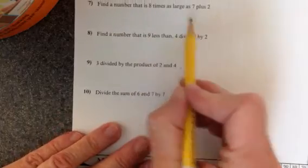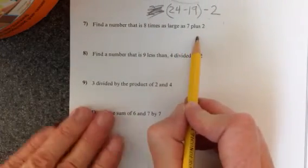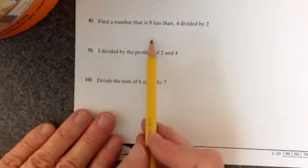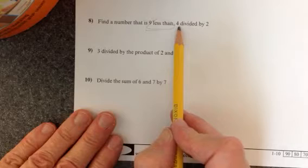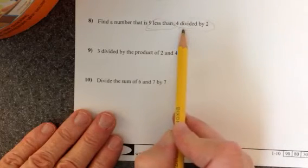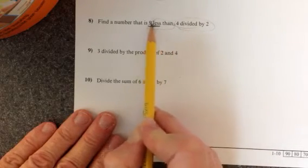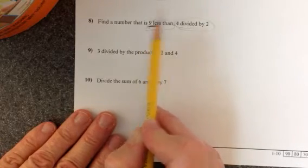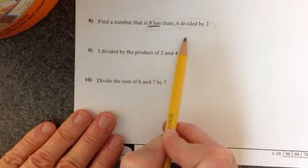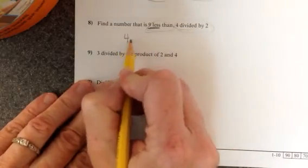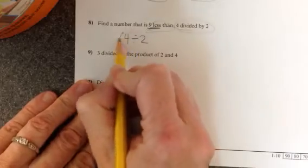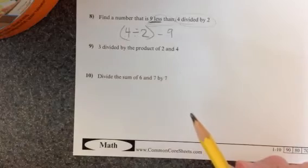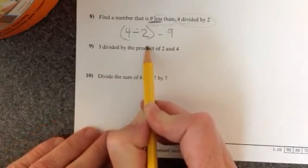Find a number that is 8 times as large as 7 plus 2. You have your 8 times and you have your 7 plus 2. Find a number that is 9 less than 4 divided by 2. 9 less, that tells us we can't do that first because it has to be 9 smaller than what the other section is. And this one doesn't make much sense either because we're doing 4 divided by 2 minus 9. And that will take us into negative numbers and we don't do negative numbers in 5th grade. But this is the right answer for the expression.